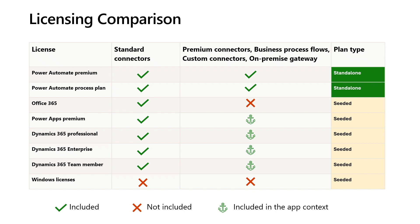Let's compare the connector use rights included in different plans. We can divide the PA licenses into two categories: standalone plans and seated plans. Standalone plans include Power Automate Premium, Power Automate Process, legacy Power Automate Per User, and Per Flow plans. With standalone plans you have access to both standard and premium connectors. With Office 365 you have access to only standard connectors, but with Power Apps Premium and Dynamics 365 plans you also have access to premium connectors — only if the flow is in app context.